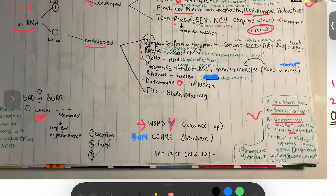Now let's move forward to bad prof. The Bunya viruses are location-based viruses, and the mnemonic is 'bun catches': C for California encephalitis, the other C for Congo, H for Hanta (which causes hemorrhagic fever and pneumonia), R for Rift Valley fever, and S for Sandfly fever. Arena viruses have two L's: the Lassa virus is spread by rodents, and LCMV stands for Lymphocytic choriomeningitis virus.